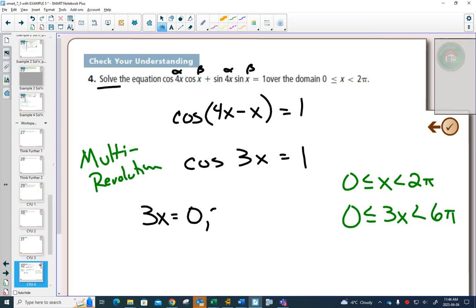And all the way around at 2 pi, that's once around. Twice around would also include 4 pi. And 3 times around would also include 6 pi. However,